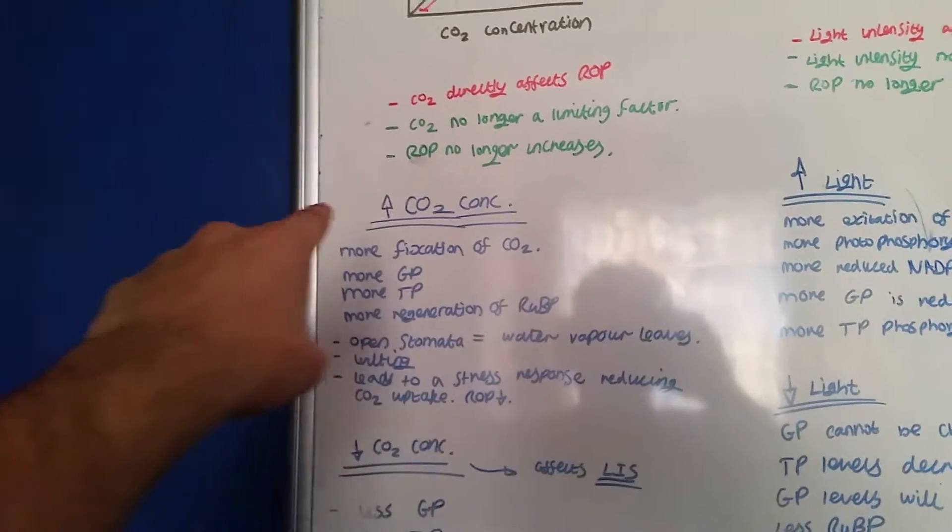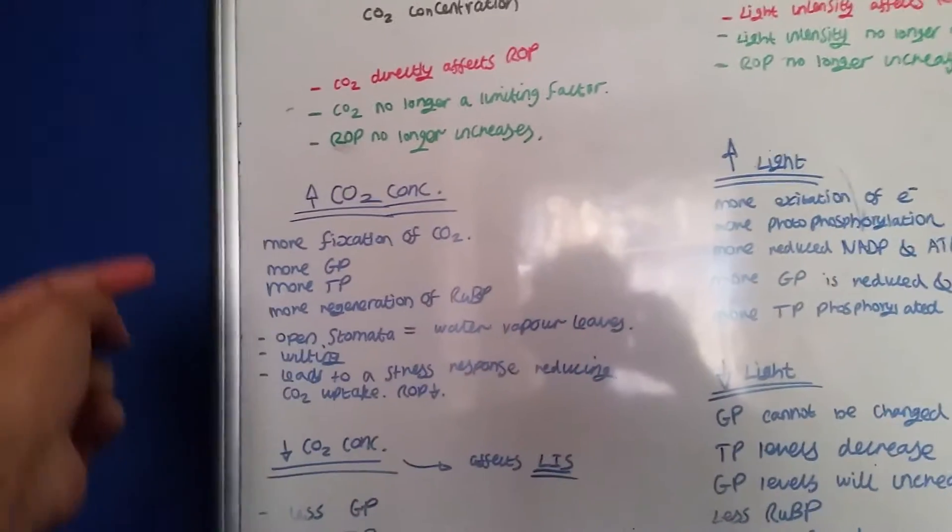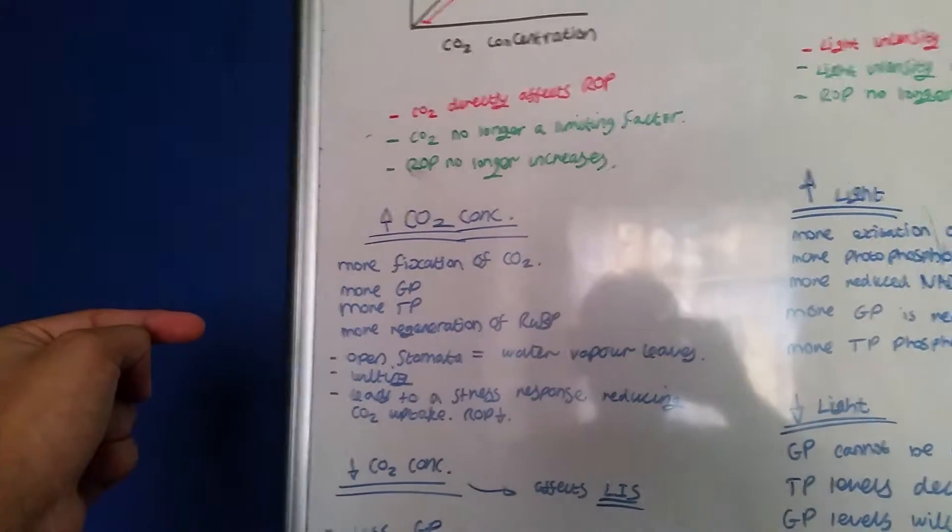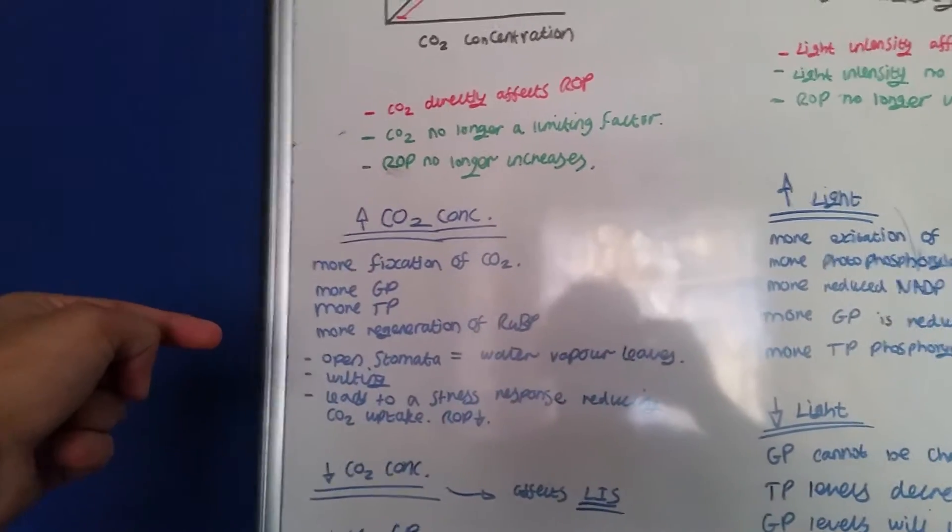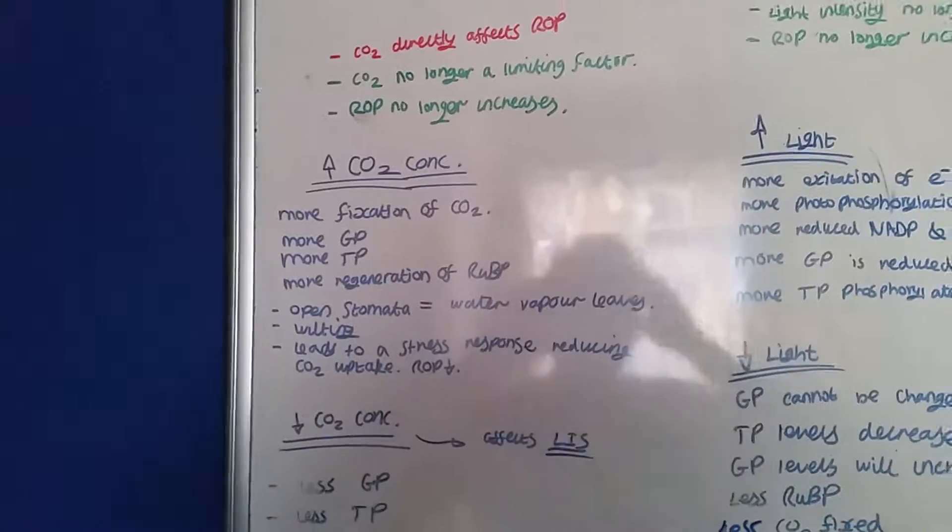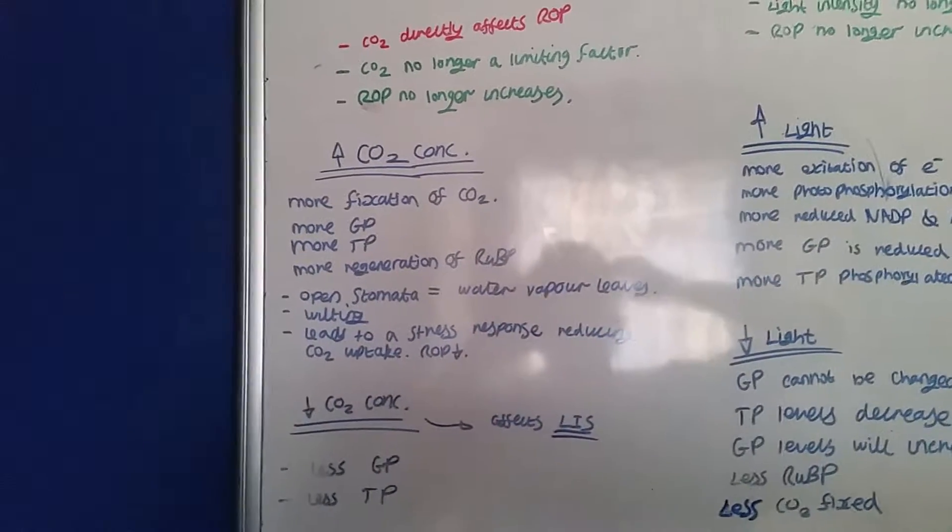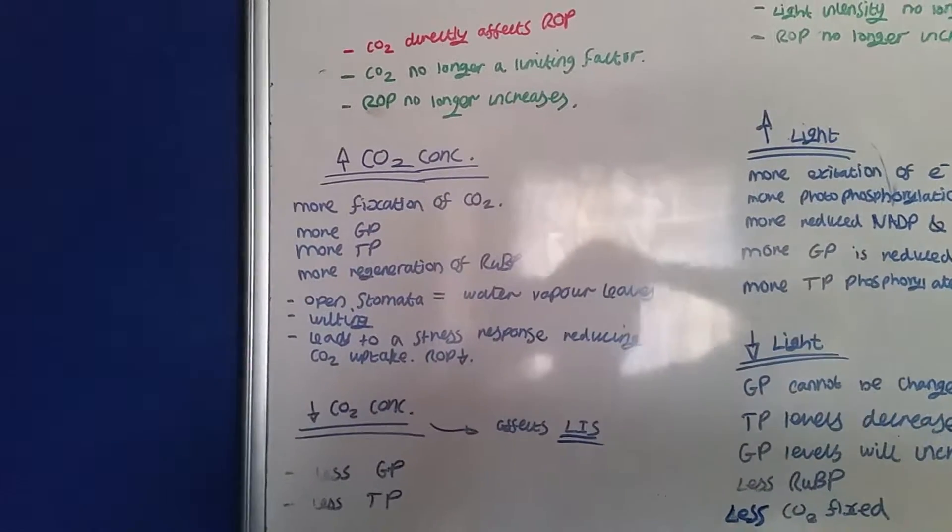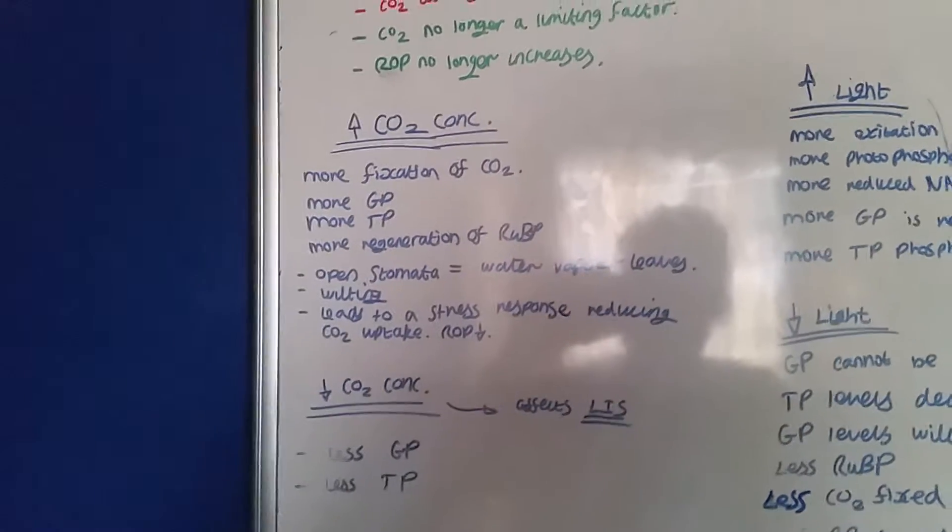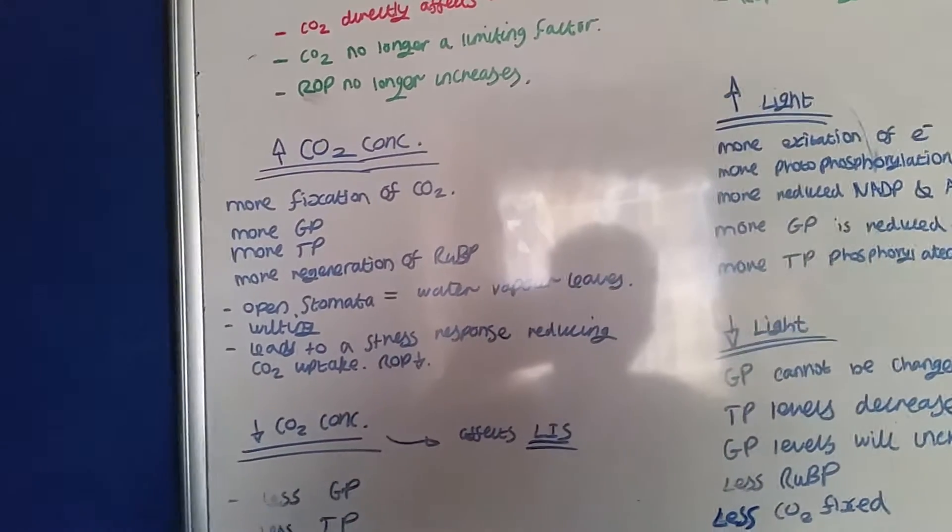So as CO2 concentration increases, there is more fixation of CO2. Hence, more GP is going to be made, more GP will be converted to TP, and more regeneration of IUB. However, as the CO2 is entering the leaf through the stomata, water vapor is leaving and this can cause wilting and potentially a stress response will be engaged. Hence, the stomata will be closed, reducing CO2 uptake, and the rate of photosynthesis decreases.